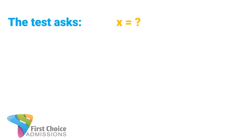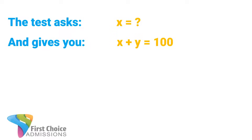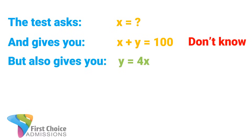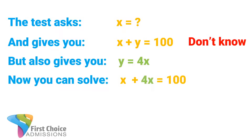This is based on a very simple but very powerful concept. If the test asks you what's the value of x and it gives you x plus y equals 100, can you tell the exact value of x? No — it depends on the value of y. But if the test also gives you y equals 4x, now you can totally solve for x. Just substitute 4x for y, do some algebra, and you see that x equals 20.